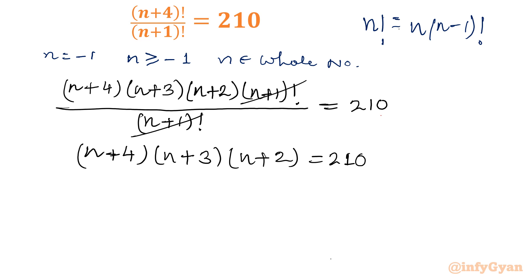Now the equation will be cubic: (n+4)(n+3)(n+2) equal to 210. Now I will give substitution here. I will consider n+3 as t. So if n+3 is t, then that means n+4 would be t+1, and n+2 would be t-1. So the equation will be (t+1) times t times (t-1) equal to 210.